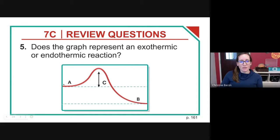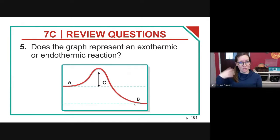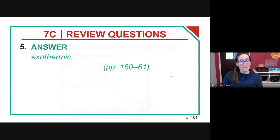On the graph: A is the energy of the reactants, B is the energy of the products, and C is the activation energy. Does the graph represent an exothermic or endothermic reaction? The energy level of the products is lower than that of the reactants, meaning energy was lost to the surroundings during this reaction. So it is an exothermic reaction.